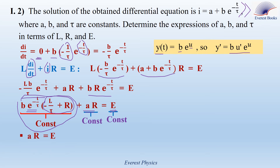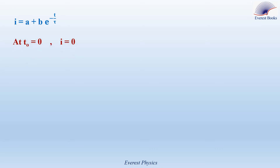Therefore, AR equals E, giving A equals E over R. And since minus L over tau plus R equals 0, tau equals L over R. To find B, we use the initial condition: at time 0, I equals 0. Substituting T equals 0 and I equals 0 gives 0 equals A plus B times e to the power 0, so B equals minus A equals minus E over R.